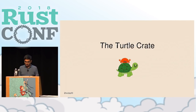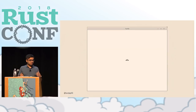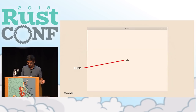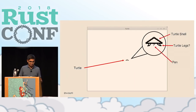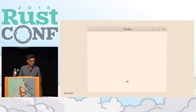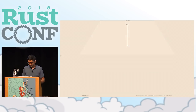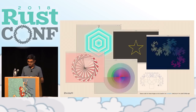So now that you know what I'm actually out to accomplish, let's talk about what Turtle actually is. The concept is pretty simple: you have a window, and in the middle of that window is a little triangle — that's the turtle's shell. This turtle has a pen attached to its tail, and we can use it to draw pictures. As the turtle moves, it drags its tail, and the pen draws the path that the turtle takes.